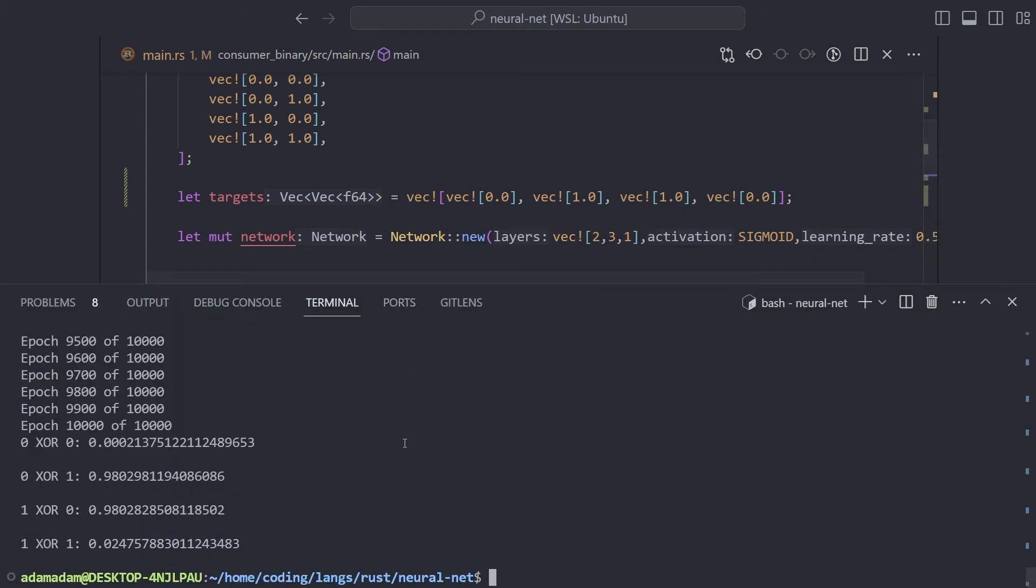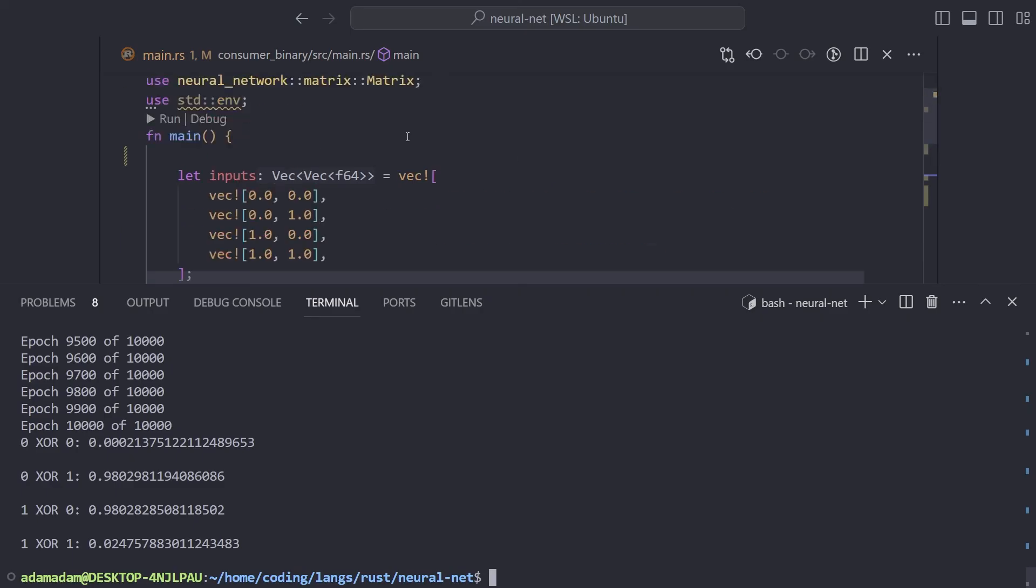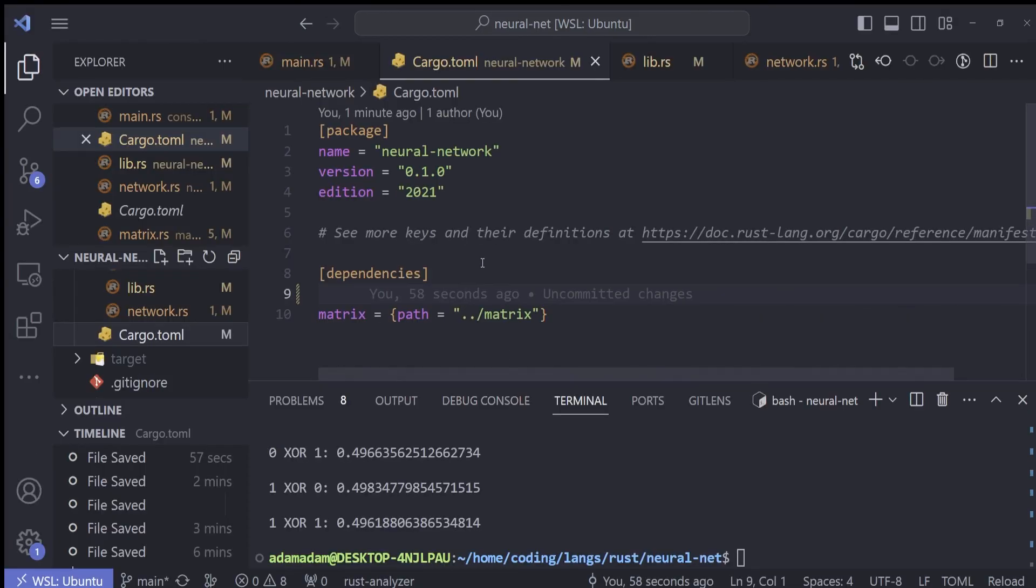As you can see, we hit cargo run, and after an epoch of 10,000 times, our neural network is accurately predicting XOR. The best part of this is that we've done it all without using a single library, meaning it's all done from scratch.